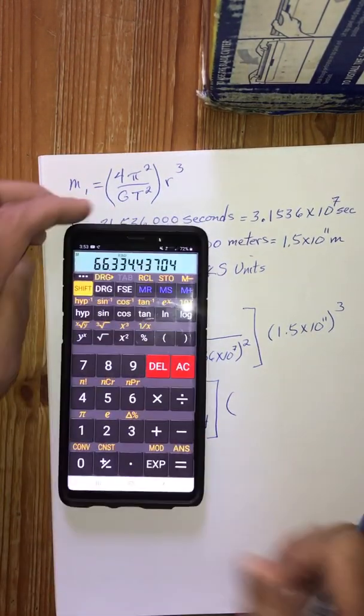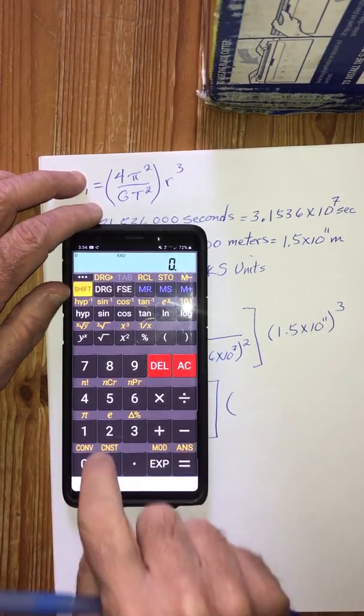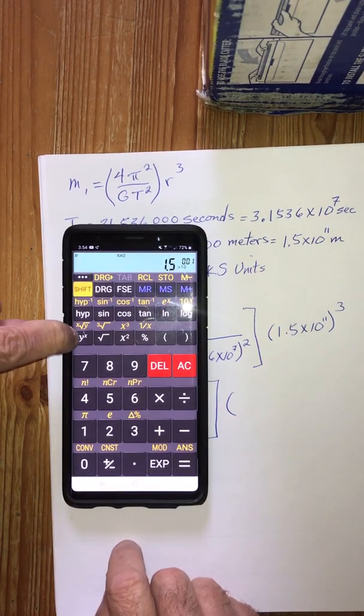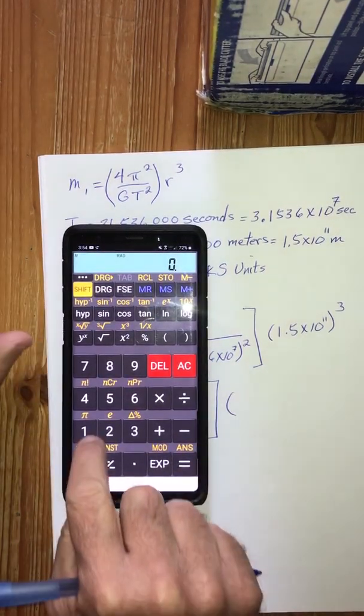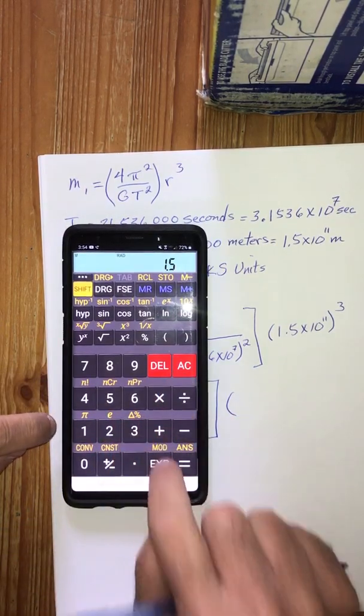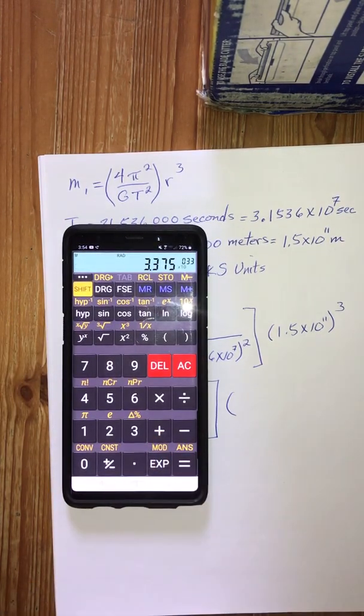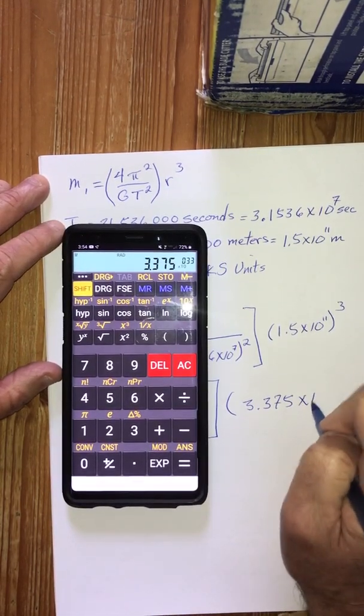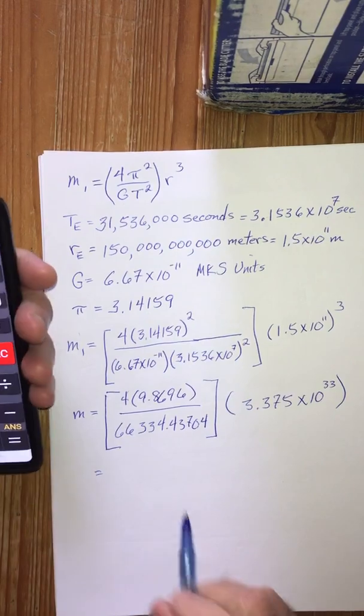And then now we're going to deal with this thing over here, which is 1.5 times 10 to the 11th, and we're going to cube that. So let's go 1.5 EXP 11 and cube that. On my calculator, I've got a Y to the X key, and we're going to do to the third power. That's 3.375 times 10 to the 33rd power. Look like gnarly numbers, don't they?